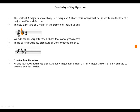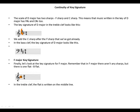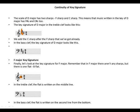F major key signature: in F major there are no sharps, but there is one flat — B flat. In the treble clef, the flat is written on the middle line. In the bass clef, the flat is written on the second line from the bottom. Thank you for watching — see you next time.